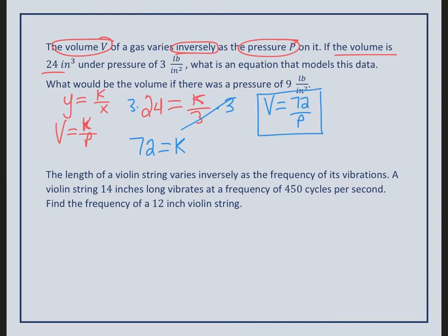Now it wants to know what if the pressure was 9. Well, let's plug in a 9. The volume is equal to 72 divided by 9. So the volume is equal to 8 inches cubed.